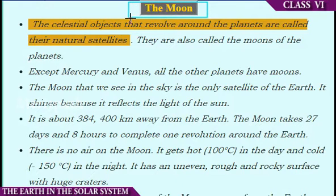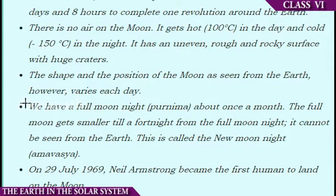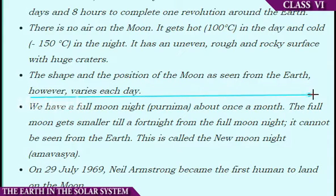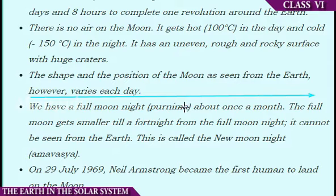The Moon is the nearest neighbor in the solar system. It is the only satellite of Earth. The Moon takes 27 days and 8 hours to complete one revolution around the Earth. The shape and the position of the Moon as seen from the Earth varies each day. Now let's learn about the phases of the Moon. When the Moon appears like a circular disk, it is called a Full Moon. In Hindi, the Full Moon day is called Purnima.